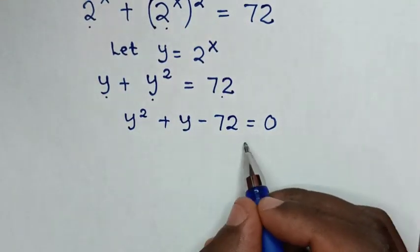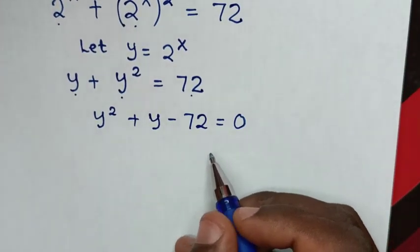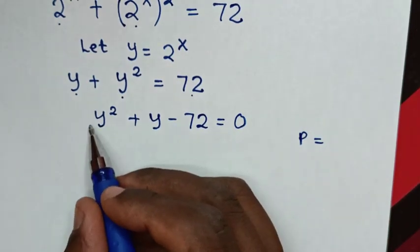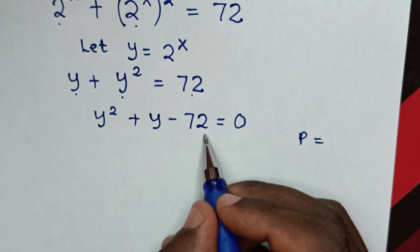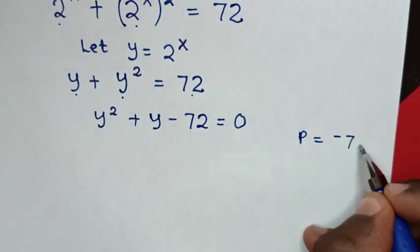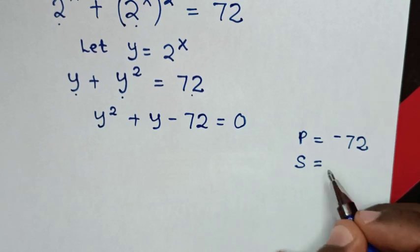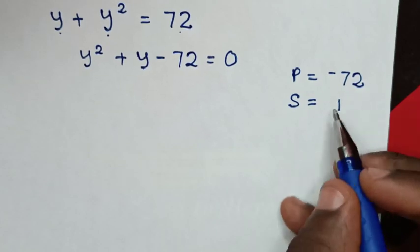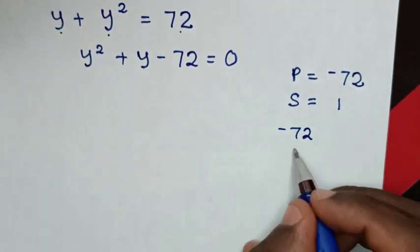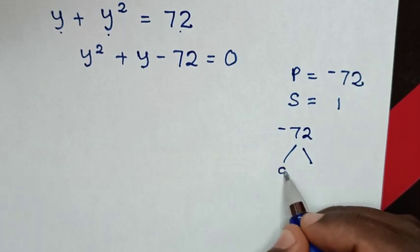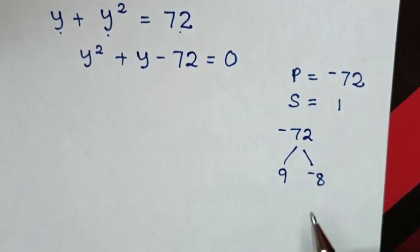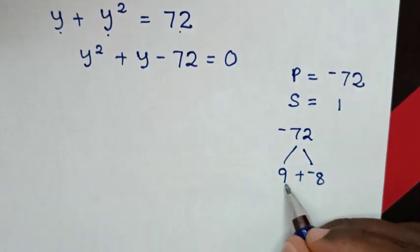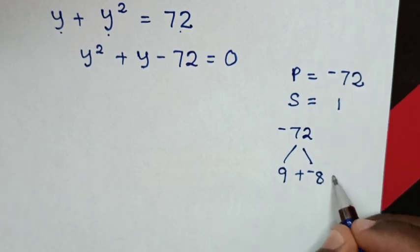Then in the next step, from this quadratic equation, we solve by factorization. The product is equal to: coefficient of y squared is 1, so 1 times constant negative 72 is negative 72. And the sum is equal to: coefficient of y is 1. From the product negative 72, the two factors are 9 and negative 8 — since 9 times negative 8 is negative 72, and 9 plus negative 8 equals 1, giving us the required sum.